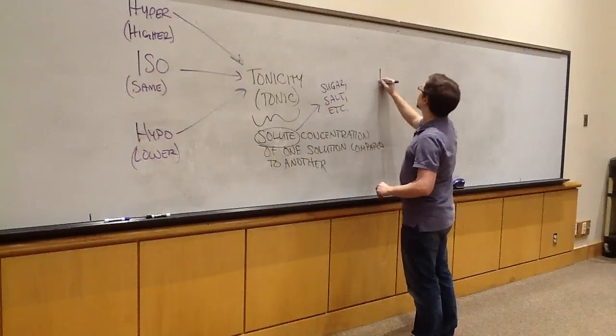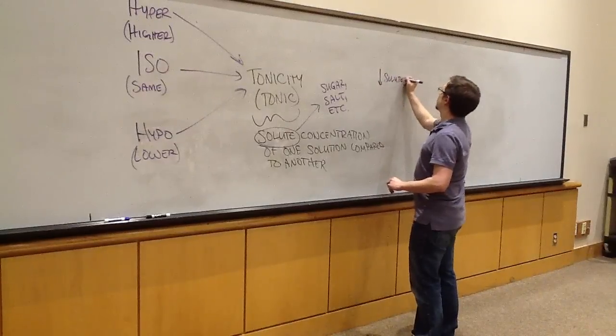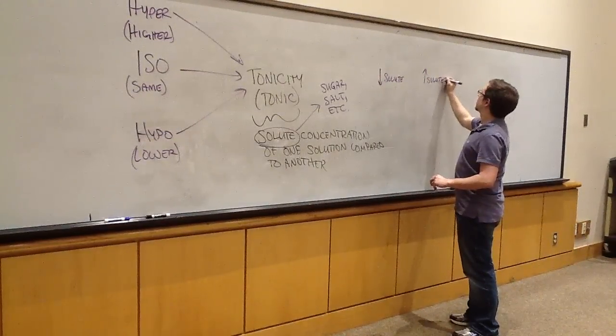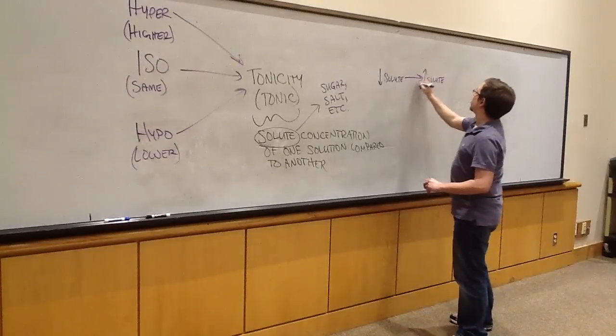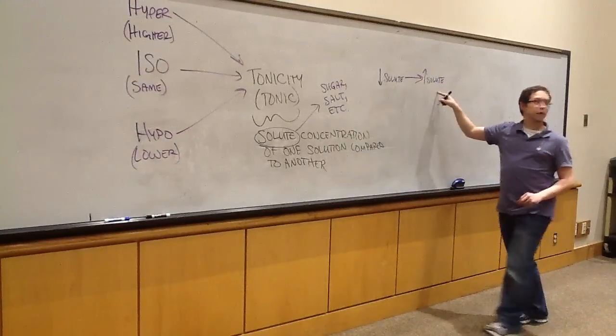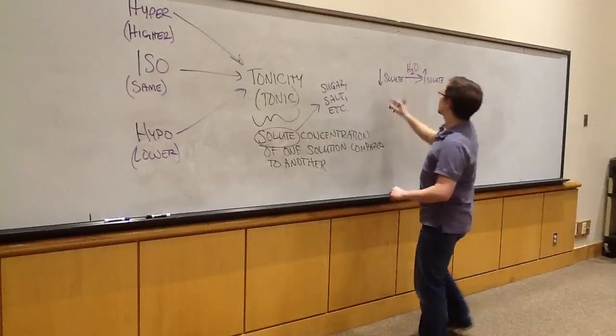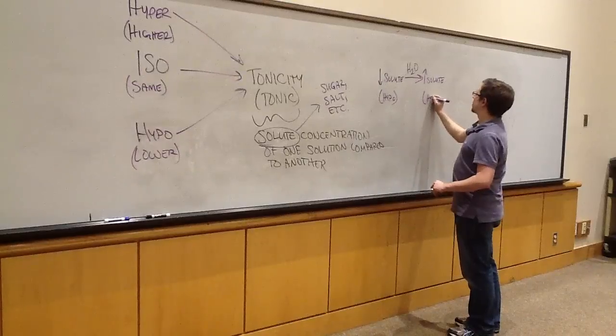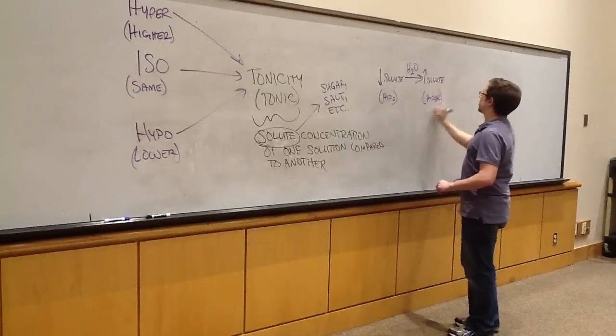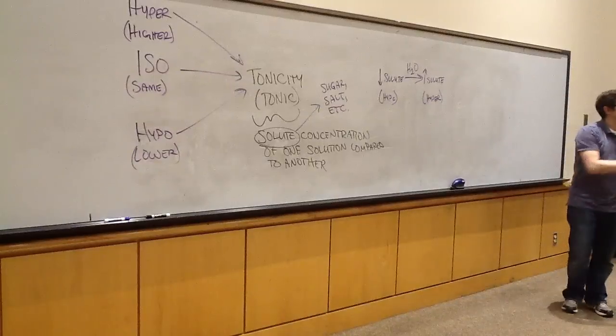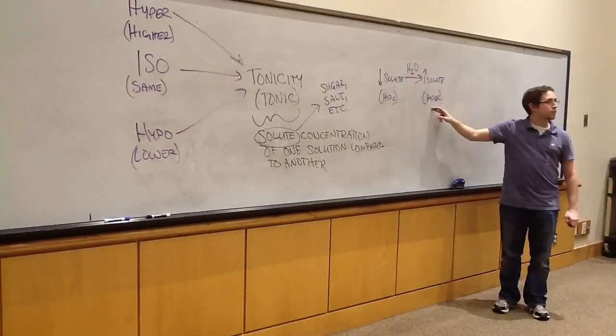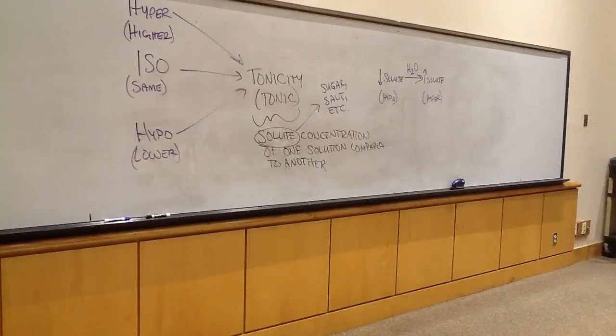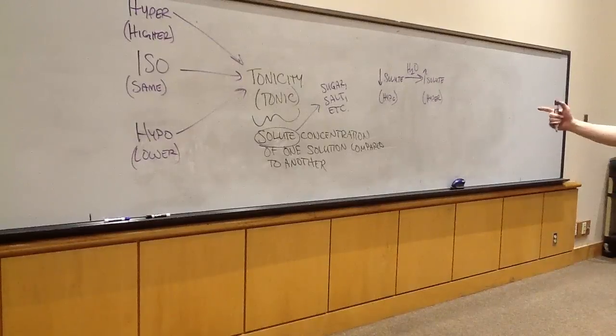Another easy thing to remember is that water always moves towards the hypertonic solution. If you've got two solutions, one with a low level of solute and one with a high level of solute, you're going to see water go towards the one with a high level of solute. The arrow always points at the hypertonic and away from the hypotonic. If you have two arrows going in opposite directions at equal rates, it's isotonic.